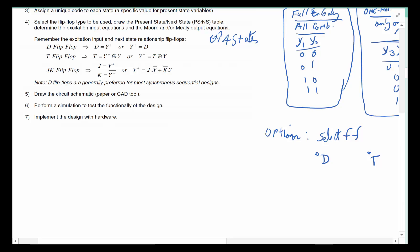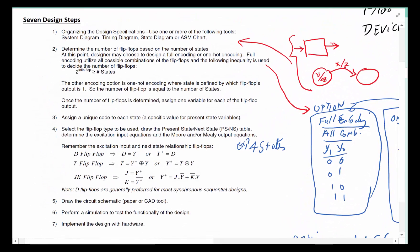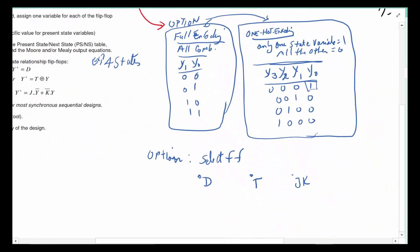Use a Karnaugh map to minimize them as well as minimizing the output equations, and then you basically draw the schematic. That completes this presentation. The goal of this presentation was to expose you to the seven design steps and talk about the fact that when somebody gives you a design, you can possibly solve that in six different ways.